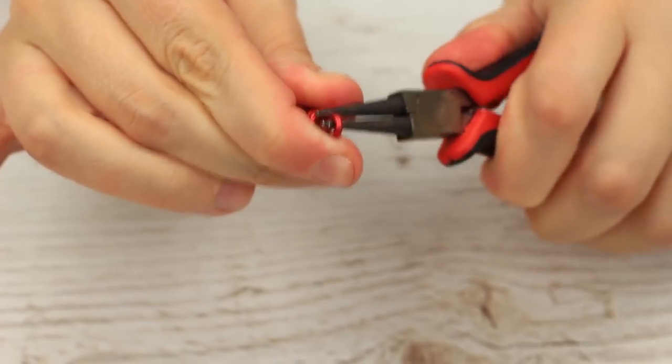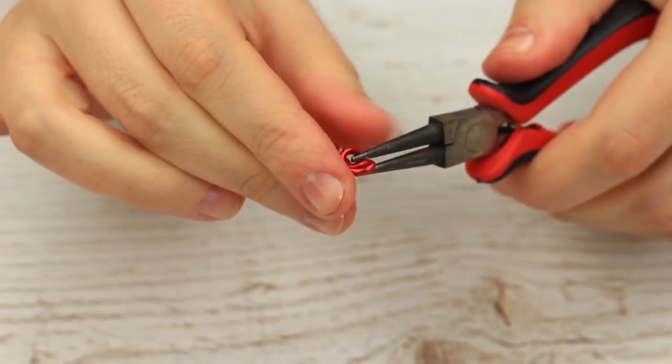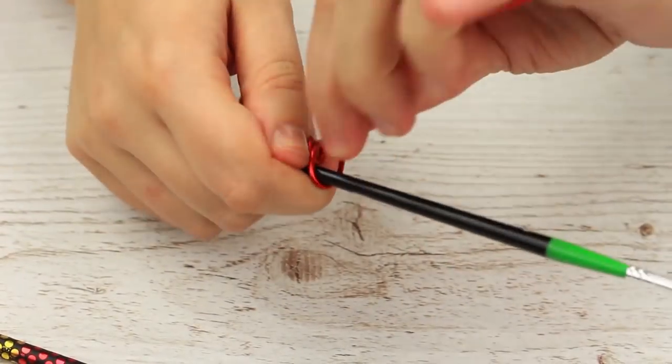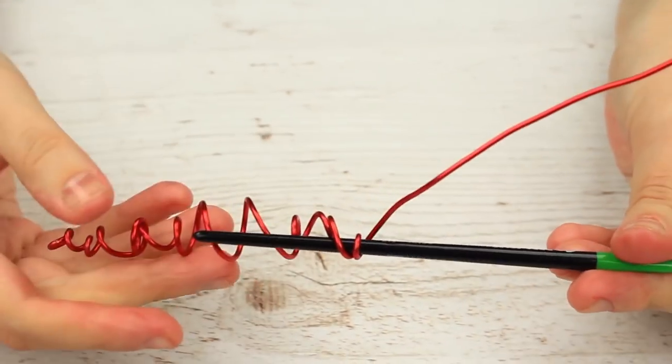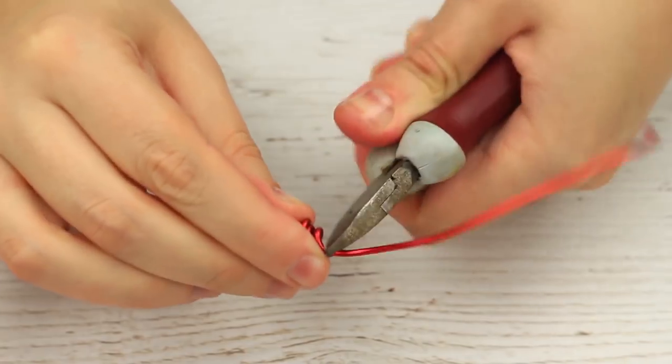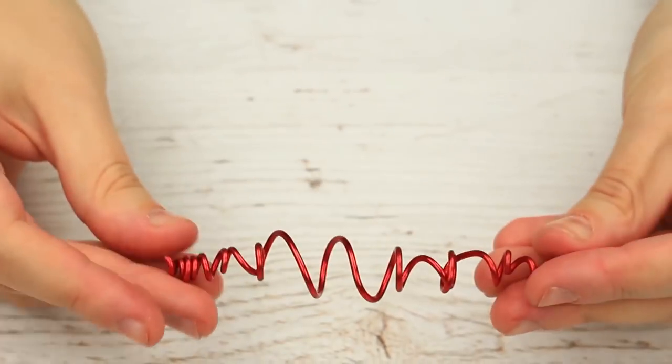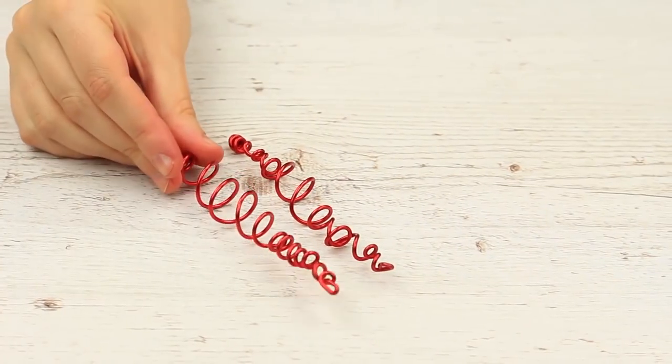Make a loop at the end using round nose pliers. Make small curls at the opposite end. Snip off the excess. Make another earring in the same way.